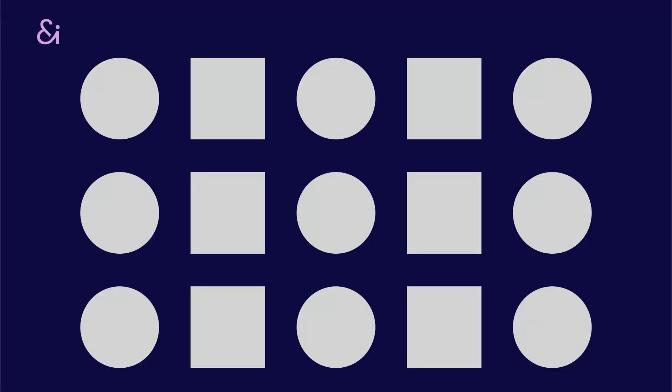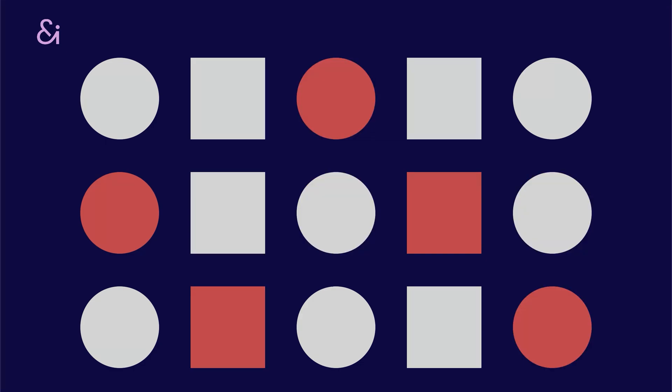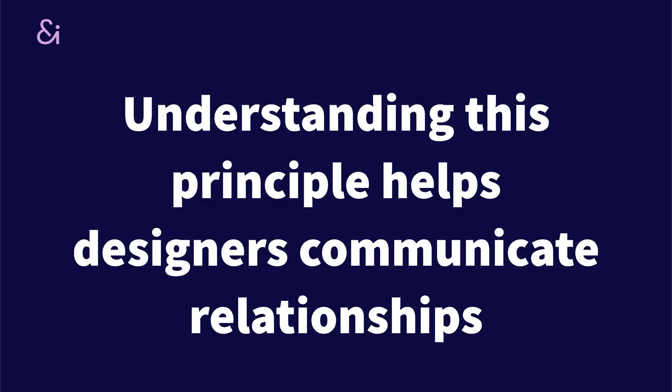This changes when we start talking about color. If we decide to color one of these rows, our brain immediately thinks there are three rows. Even if we change the order of the colors in each shape, our brain groups them because the similarity of color jumps out over the shapes. Understanding this principle helps designers communicate relationships and hierarchies depending on the use case.